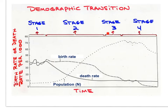In stage three, the population is still growing but less quickly due to falling birth rates. In the post-industrial stage, birth rates fall to match death rates, possibly going below death rates, and the population no longer grows.